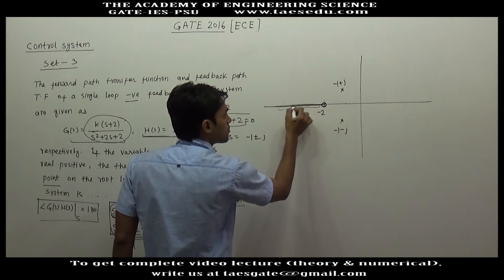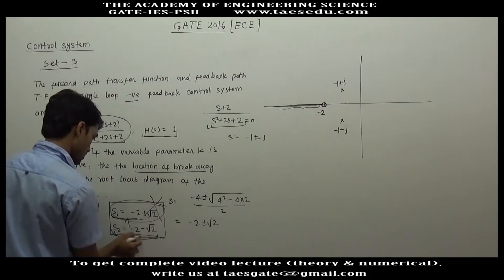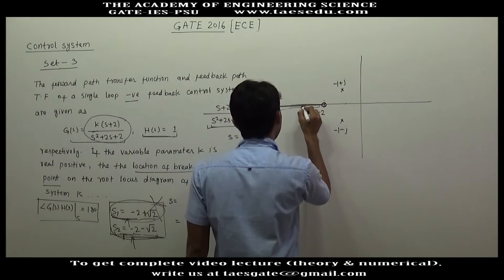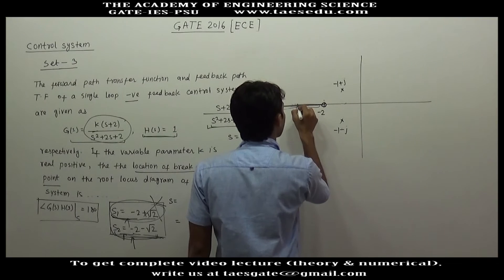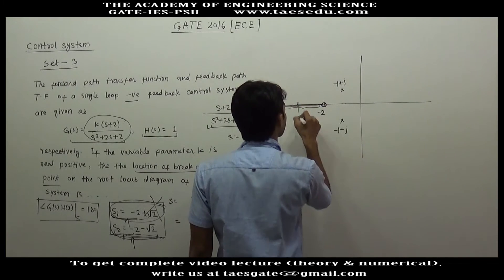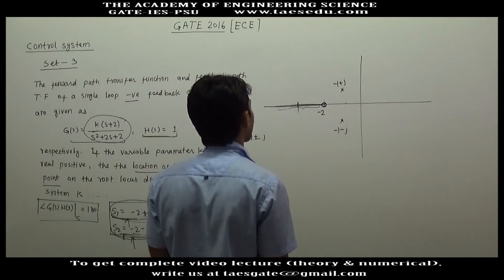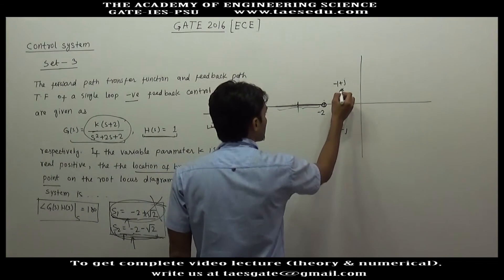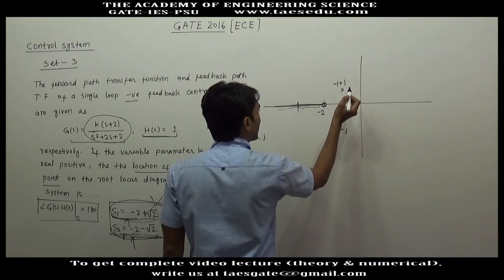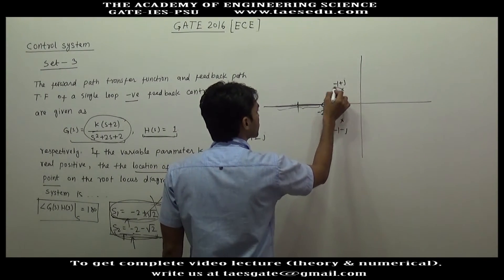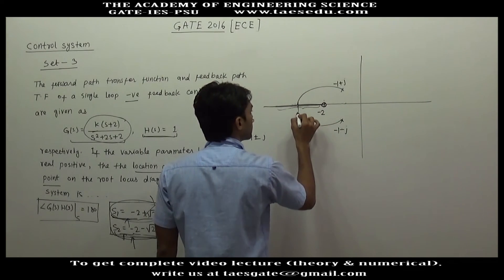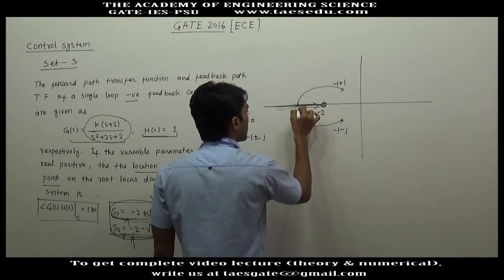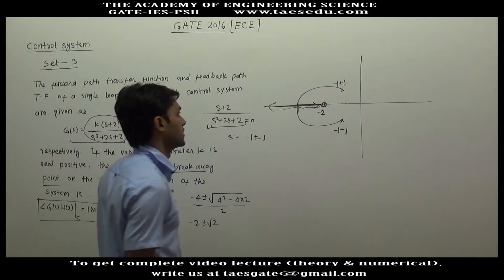The point s₁ = -2 minus √2 lies to the left of -2, and all points left of -2 are on the root locus, so this is the actual breakaway point. One root will terminate to the zero and the other will go to infinity.